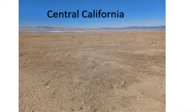This is what central California looks like. It's a desert where it does not rain much at all. You can see no plants, no trees, nothing green because there is not enough rain here.